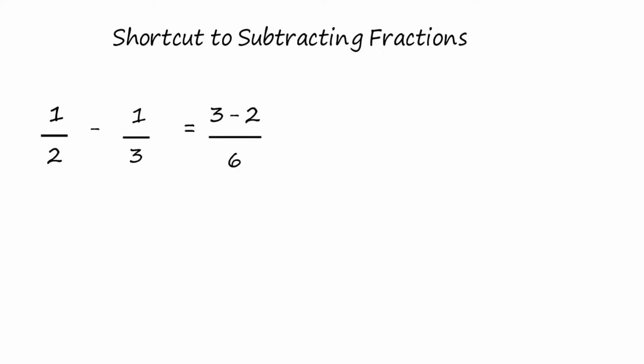That's how you do the shortcut method. Now, we'll just do the subtraction on top. Three minus two is one, and of course, it's over the denominator, six. The answer is one-sixth.